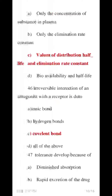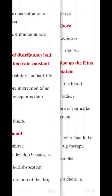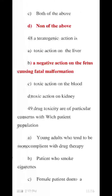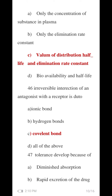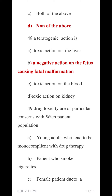Question 47 MCQ: Tolerance develops because of — options include rapid absorption of drugs or both A and B. The D number option — none of the above — is correct, because none of the listed options correctly explains tolerance development.